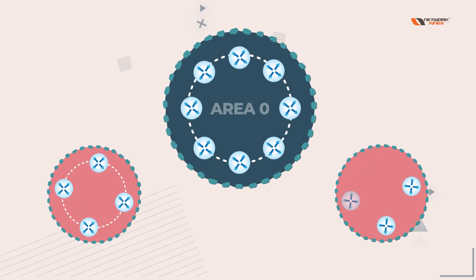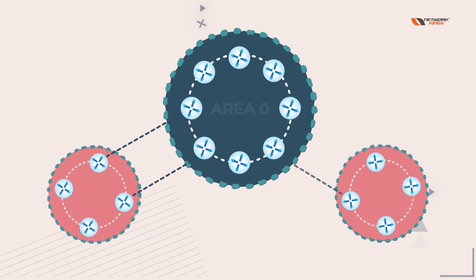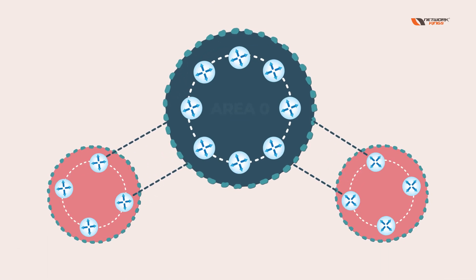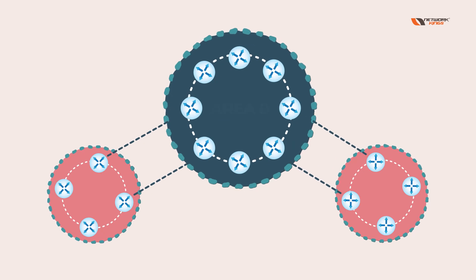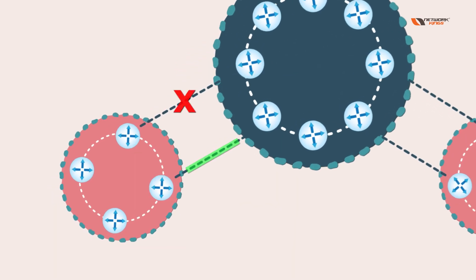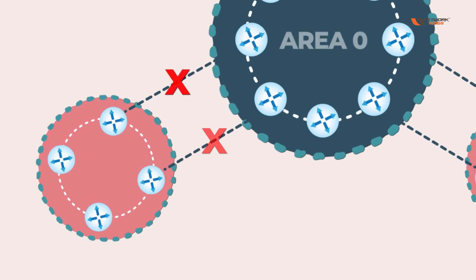Normally we have a limit, and you can connect one link or two links from one area to another. If one link goes down, your area will not be separated. If both links go down, this is what we call an OSPF partitioned area.